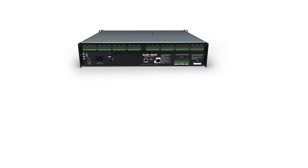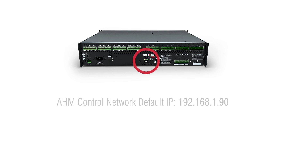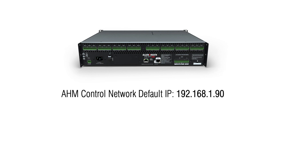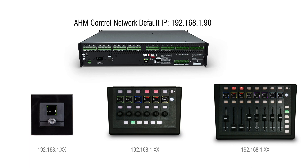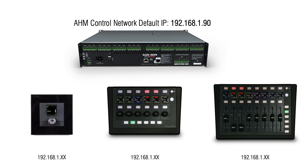By default, the control network port of AHM has an IP address of 192.168.1.90. Allen & Heath IP controllers connected to this port must be in the same network range and subnet as the AHM device. IP-1 controllers have a default address of 192.168.1.74, IP-6 have a default address of 192.168.1.72, and IP-8 has a default address of 192.168.1.73.